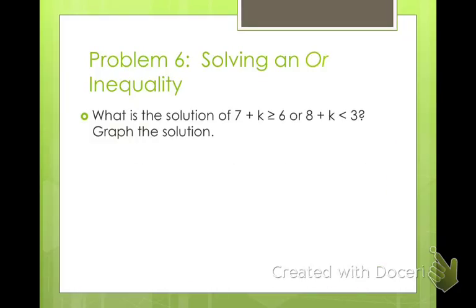Alright, and last one is the OR. So OR is also a compound inequality. So we're going to go ahead and solve this just like we did the other one. Subtract 7, so K is greater than or equal to negative 1. And subtract 8, just kidding. K is less than negative 5.